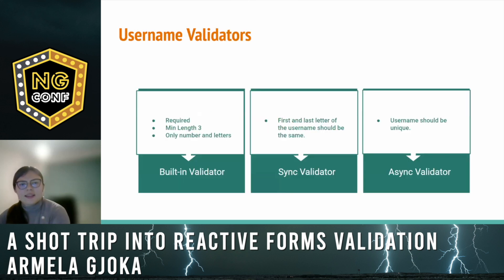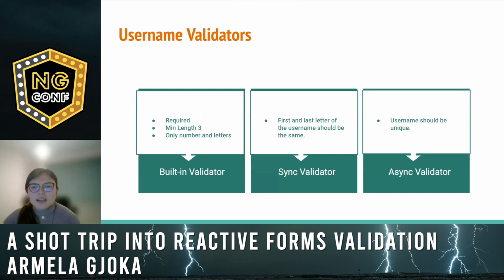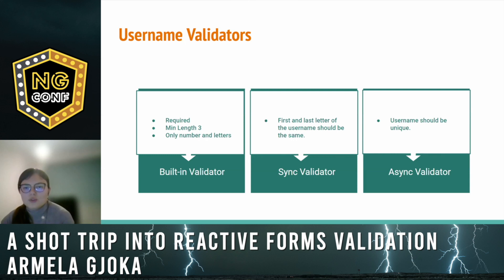Let's consider a case where we have a field username. For this field to be valid, it should have a value, a minimum length of three, and it should only contain numbers and letters. I've also added another validation condition that the first and the last letter should be the same, and it should also be unique. As we discussed, using the three main categories, this is how we would organize these validations for the username form control. We'll take advantage of the built-in validators, and for this case we will just need to write two custom functions: one for the first and last letter to be the same, and one for the value to be unique.